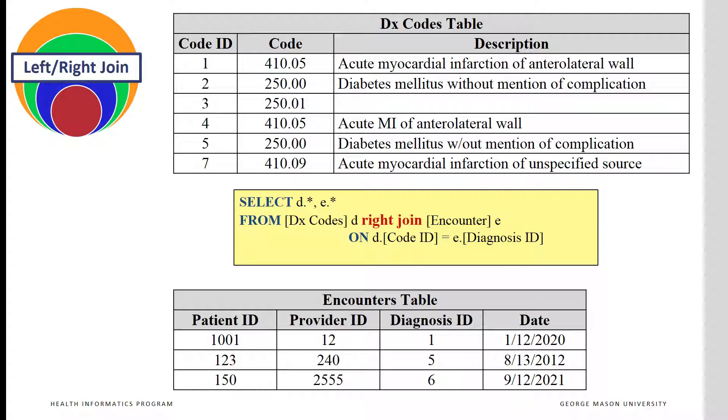Following with the previous example, in the right join, we can display all claims from encounter table and their corresponding text from diagnosis table. All of the encounter table records are included. For diagnosis 1 and 5, the description is included from diagnosis code table. For the record 6, a null value is included for description and for code.